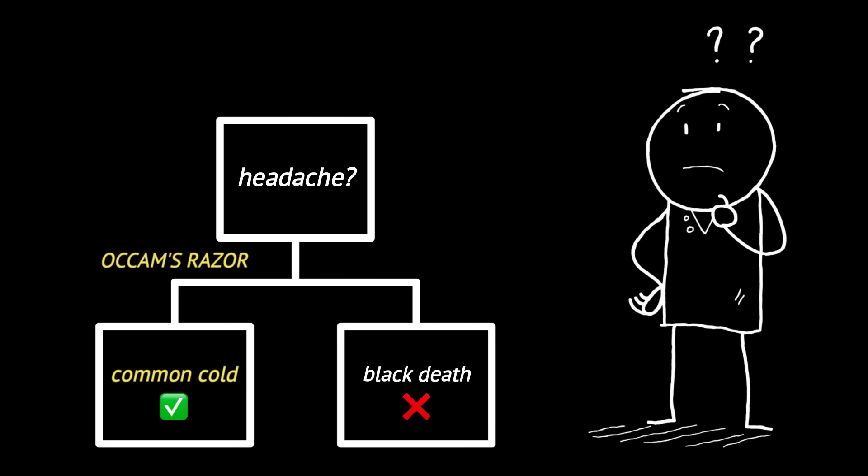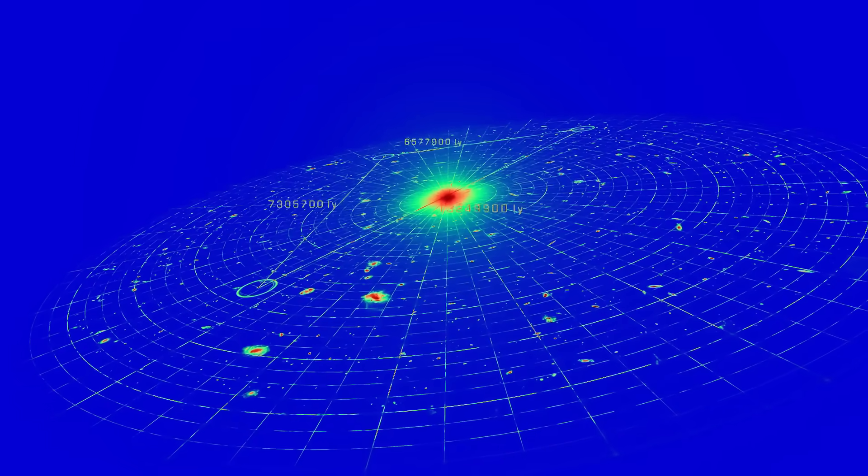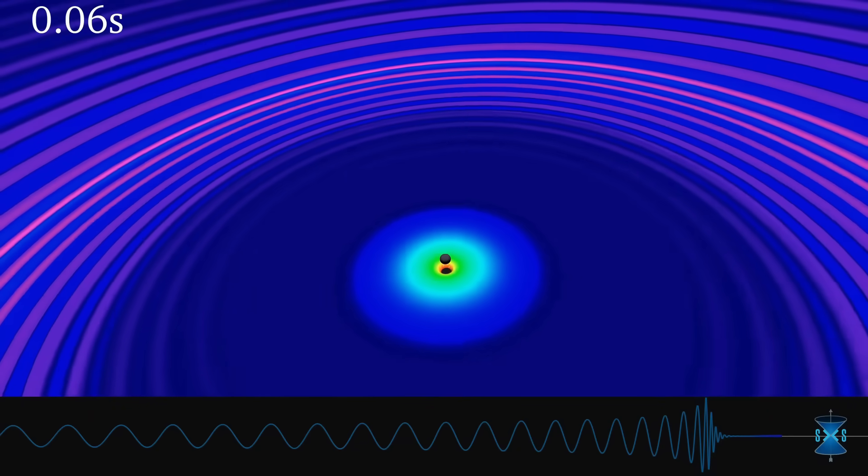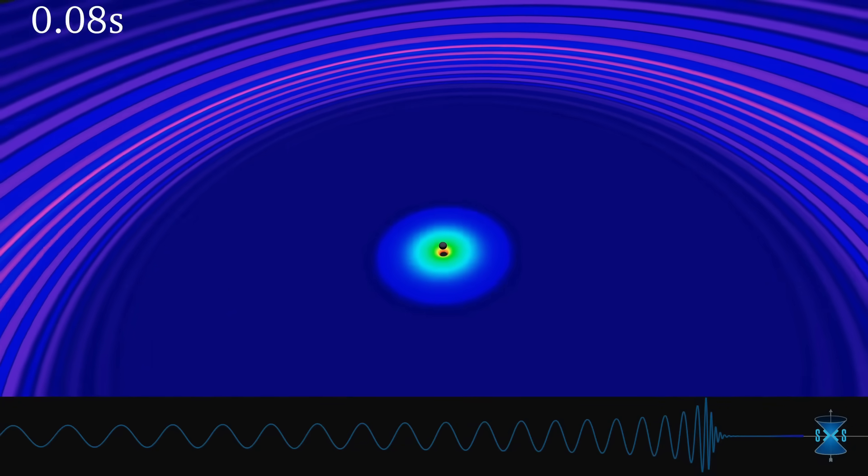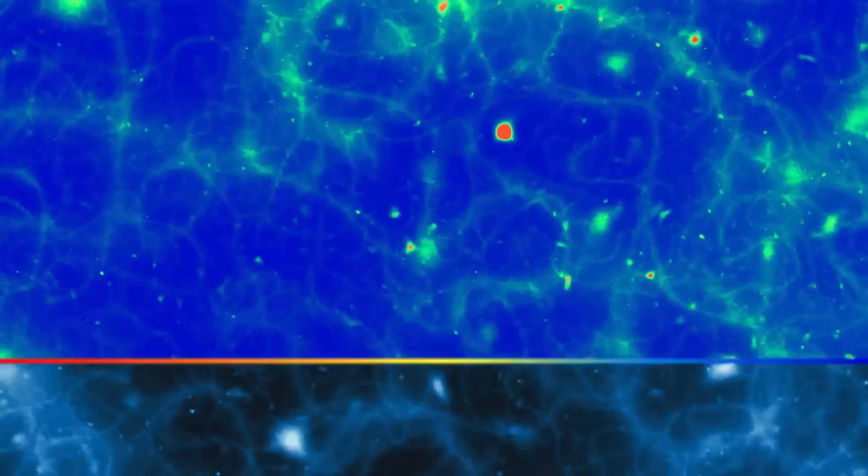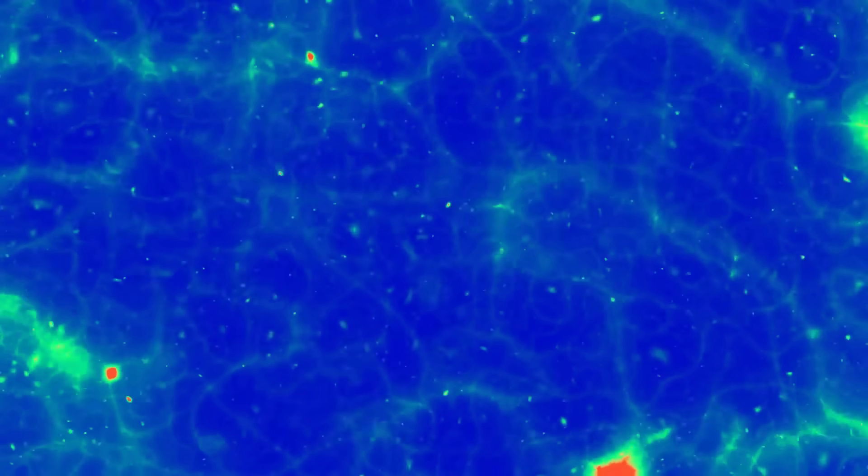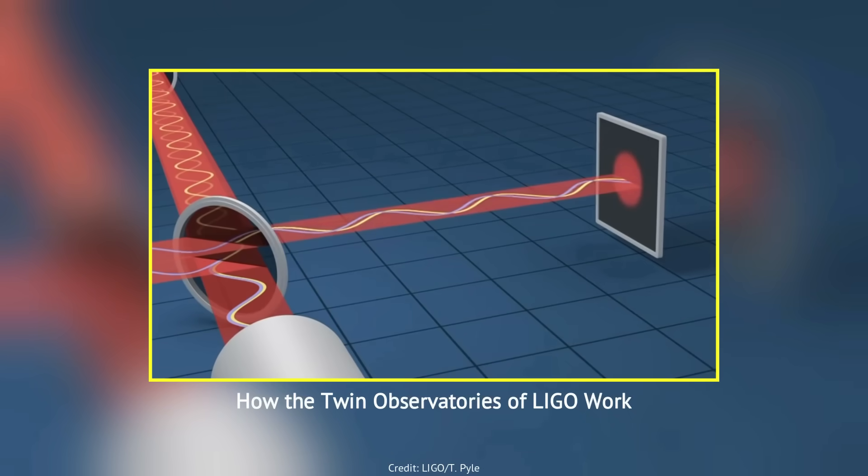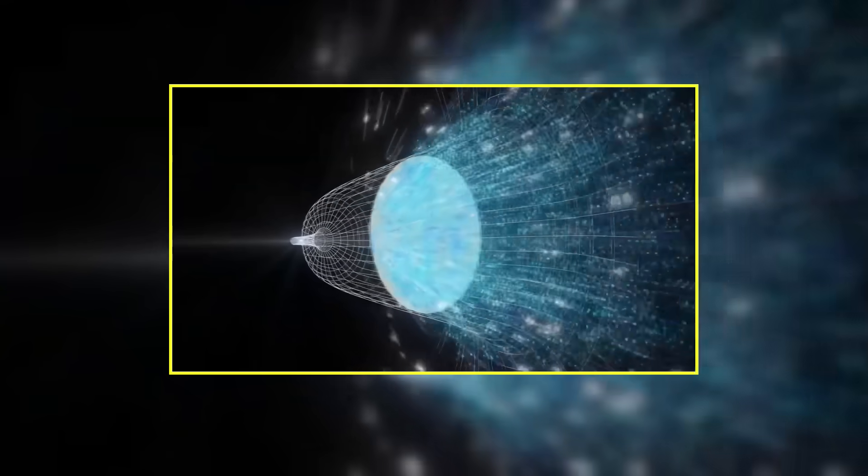But why bring up Occam's Razor here, you ask? Because many inflation models suggest that the early universe's sudden rapid expansion should have also created long wavelength gravitational waves, essentially ripples across spacetime. If detected, these waves would strongly confirm the inflation theory. However, despite refined searches, scientists have found no sign of these waves. And what makes it worse is that each new experiment narrows the field, ruling out more inflation models along the way.